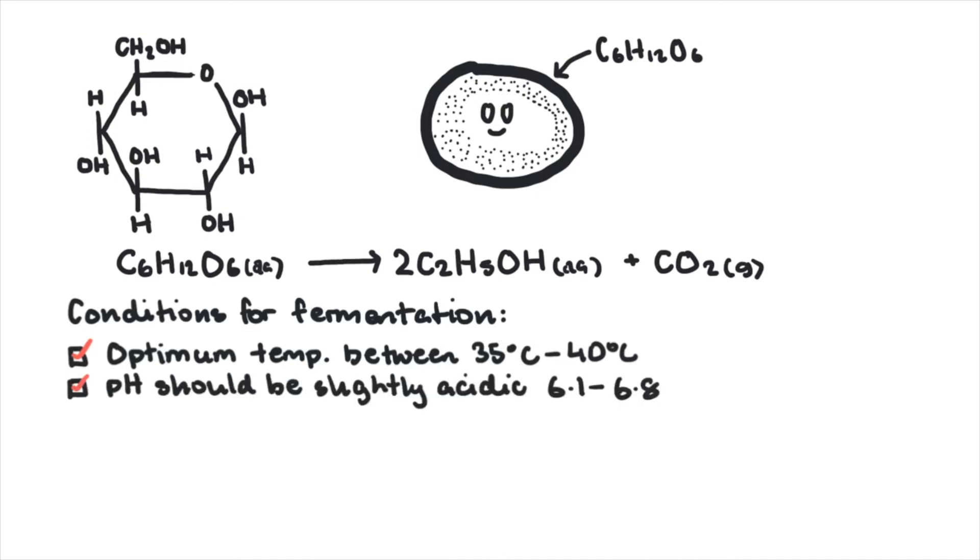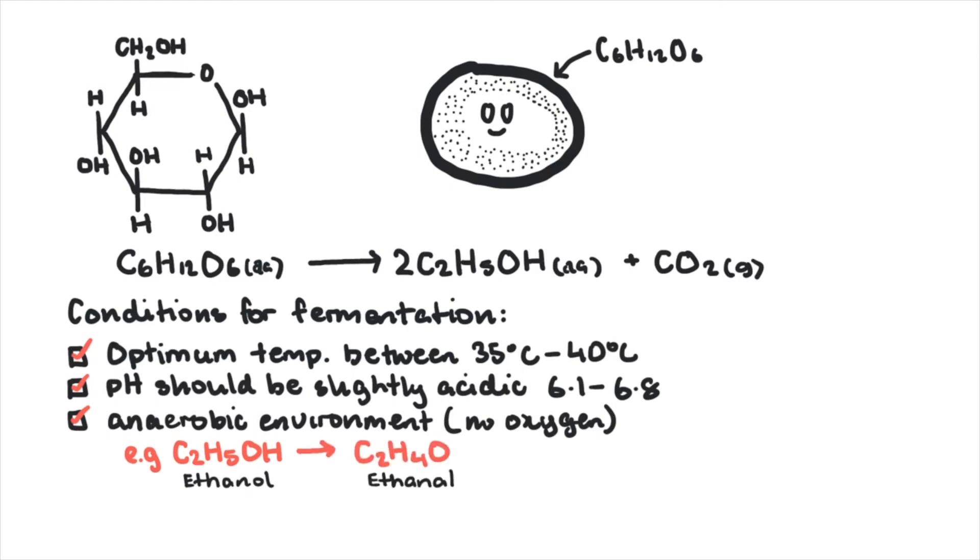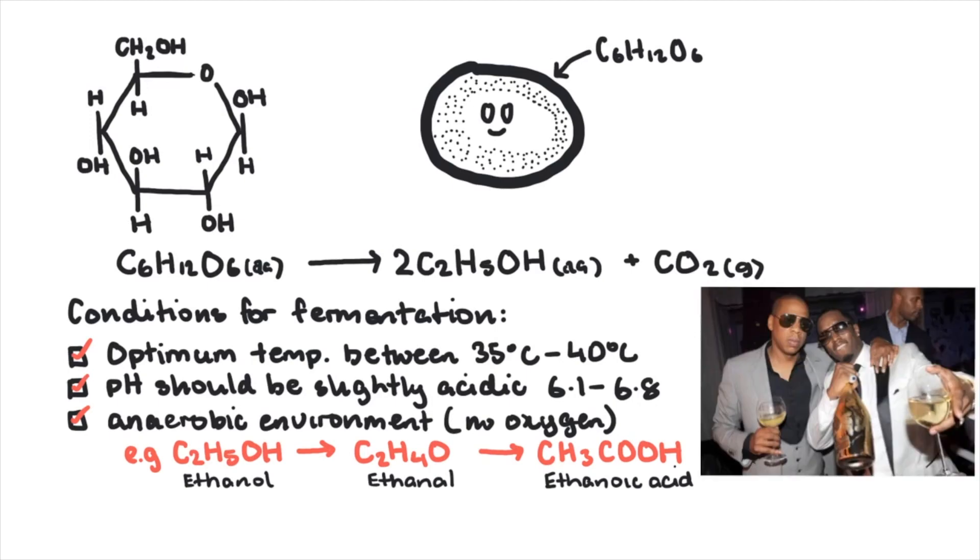This leads into pH. Fermentation needs to be slightly acidic. It also needs to be anaerobic conditions, in the absence of oxygen. If oxygen is present, the ethanol produced can be oxidized into ethanal and eventually ethanoic acid, which is that sour taste in wine if it's left out too long.